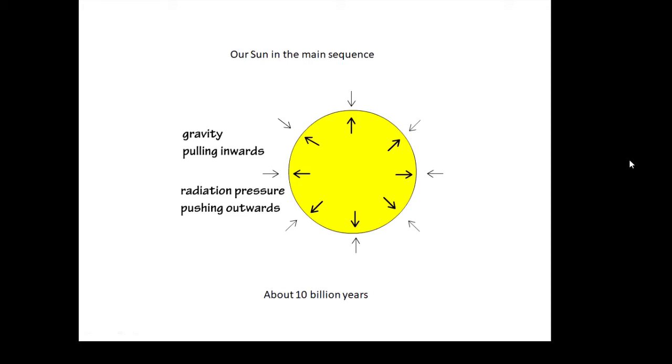Our Sun is basically an atom bomb exploding, and it's been exploding for five billion years. A nuclear fusion bomb, an atom bomb, an A-bomb exploding, and it will do this for about 10 billion years.